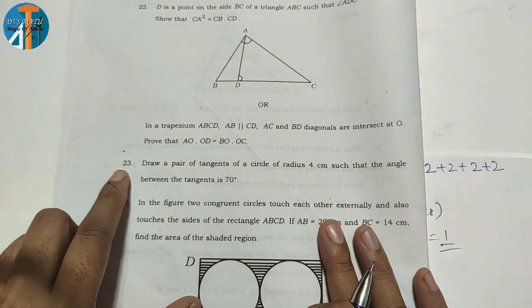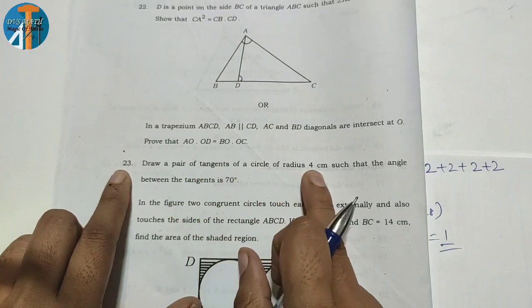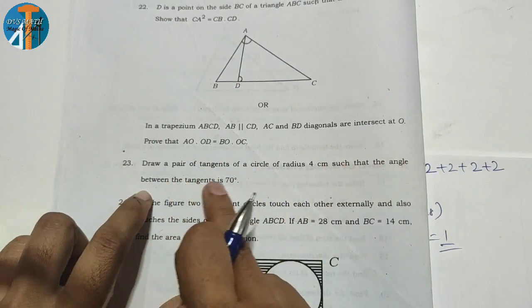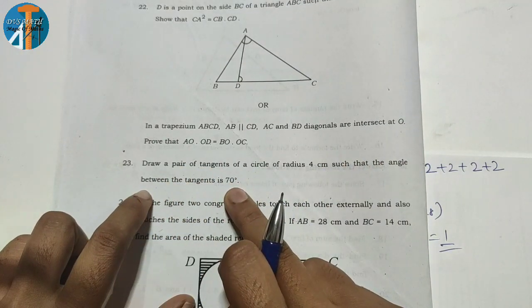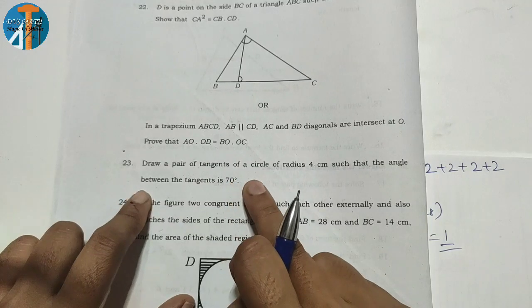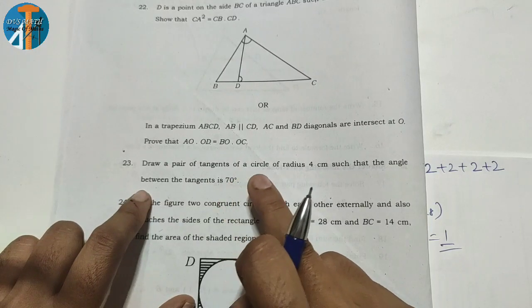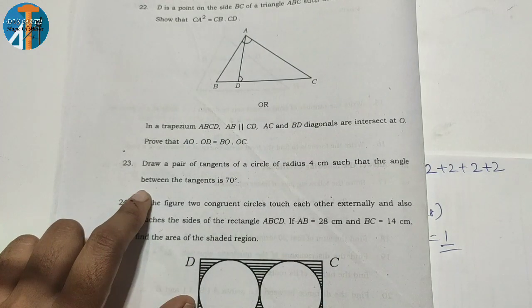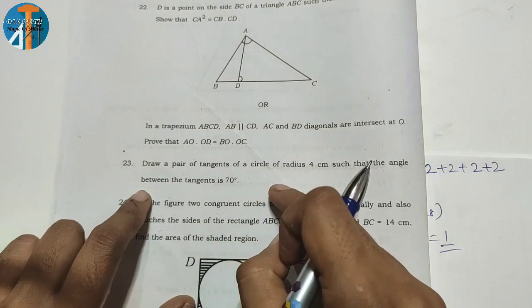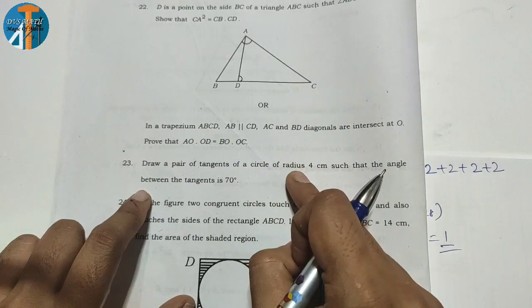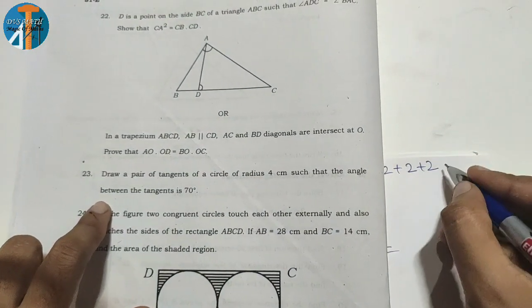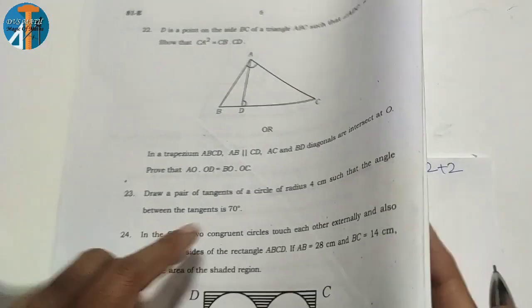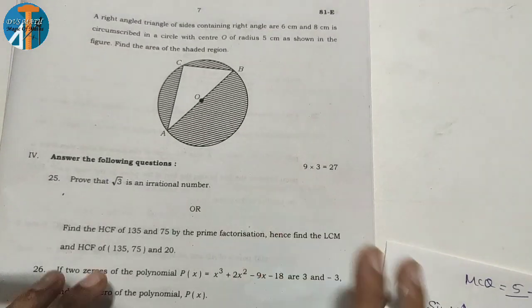Probability question: A box contains 28 bulbs, of which 7 are defective. Find probability of drawing a non-defective bulb. Total 28, defective 7, so non-defective = 28 - 7 = 21. Probability = 21/28. Easy to solve. Question 23: Draw a tangent of radius 4 cm such that angle between them is 70 degrees. You join the radius at 110 degrees. This gives 2 marks.